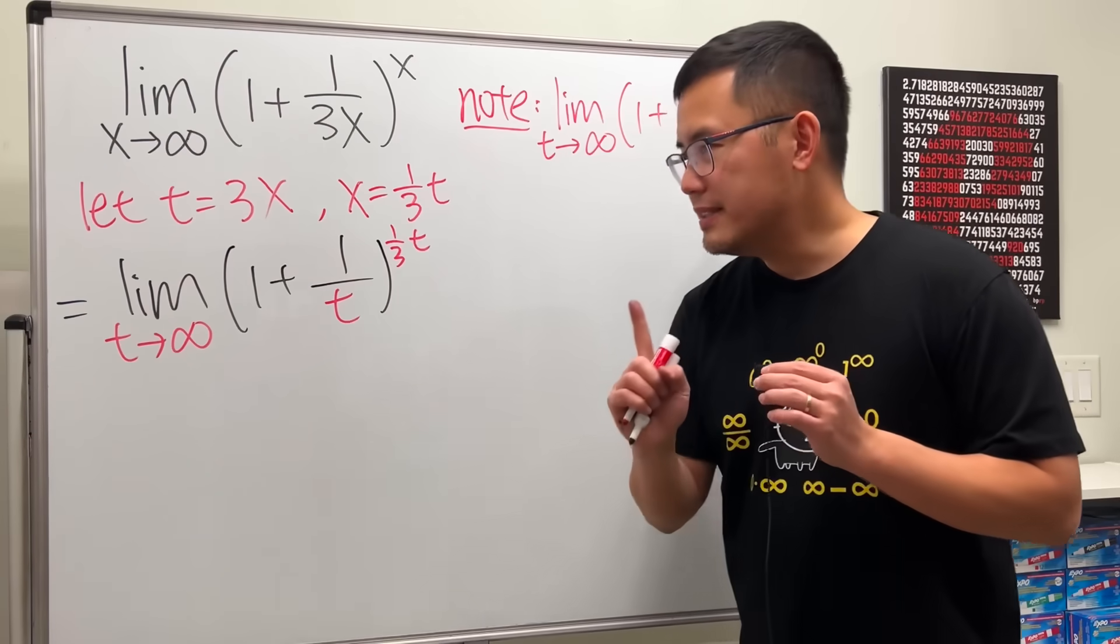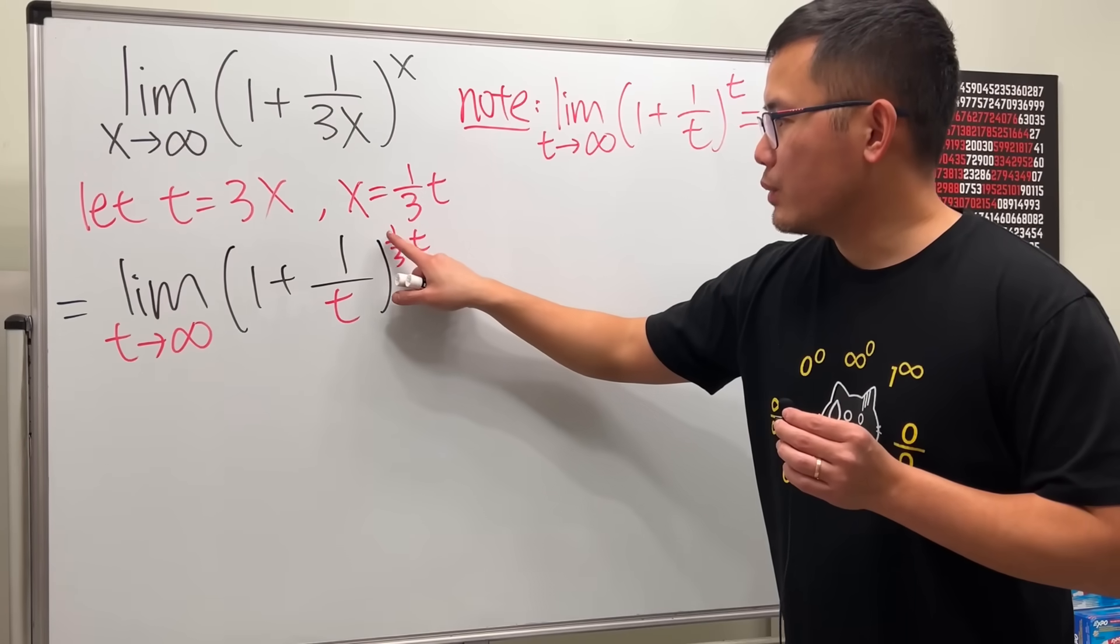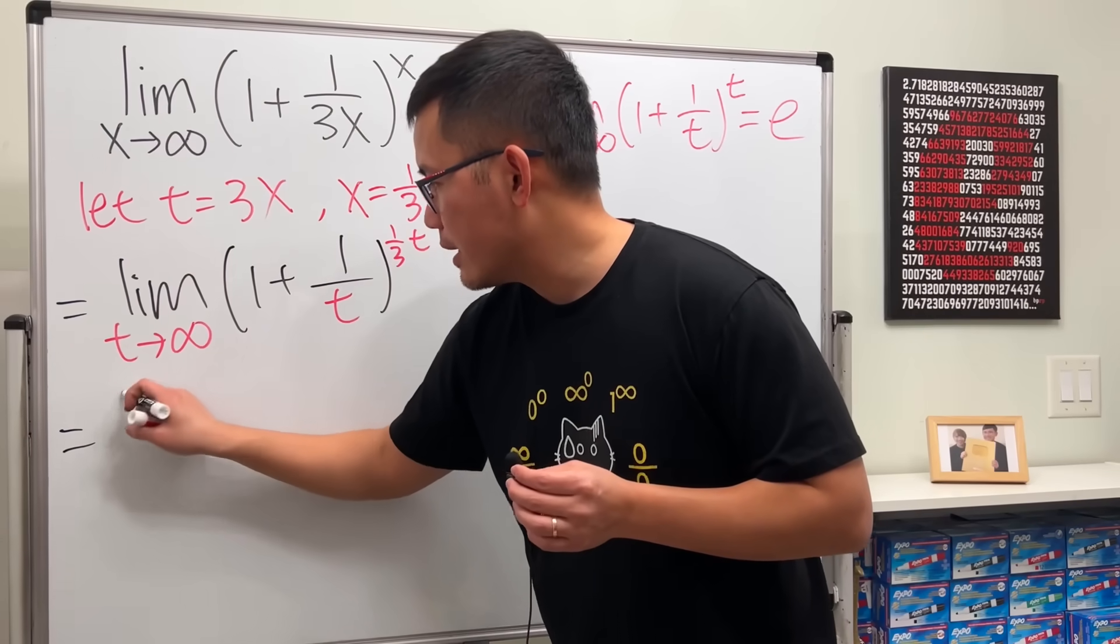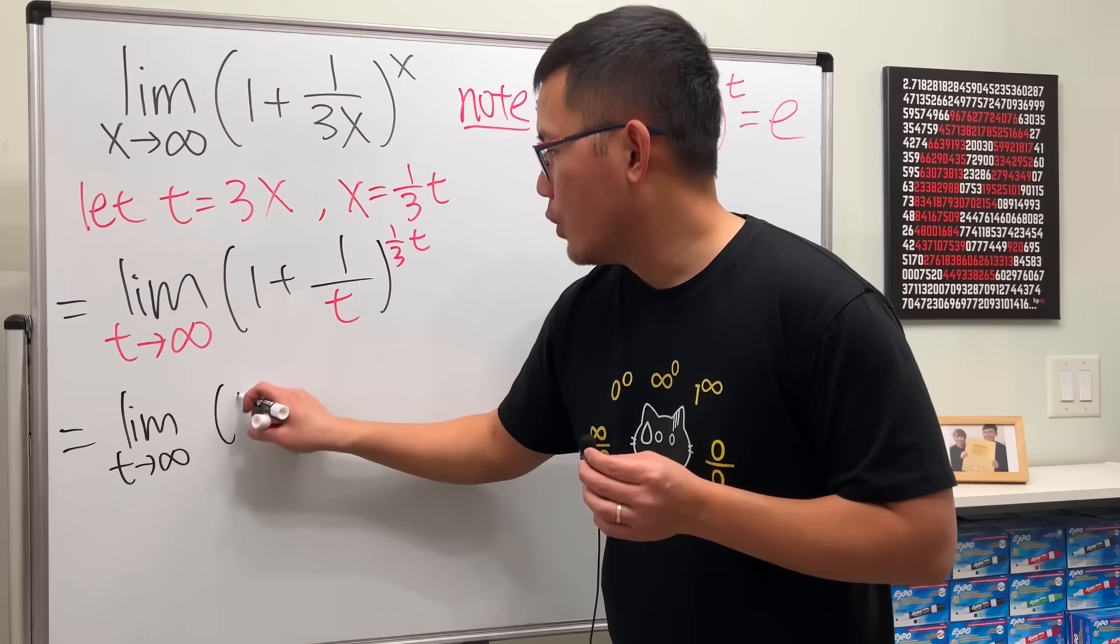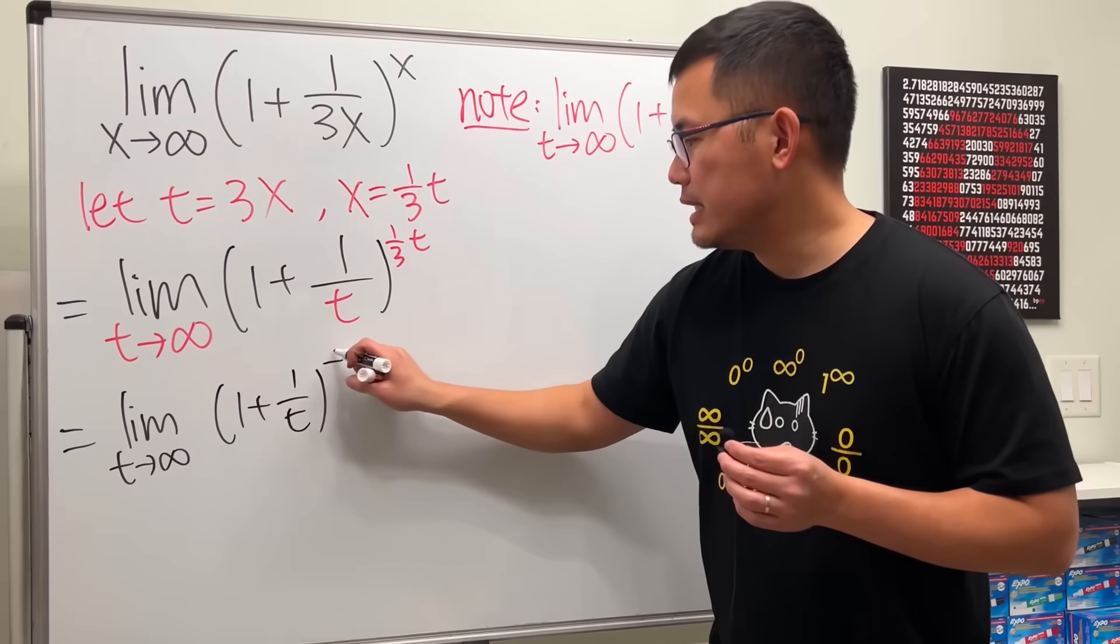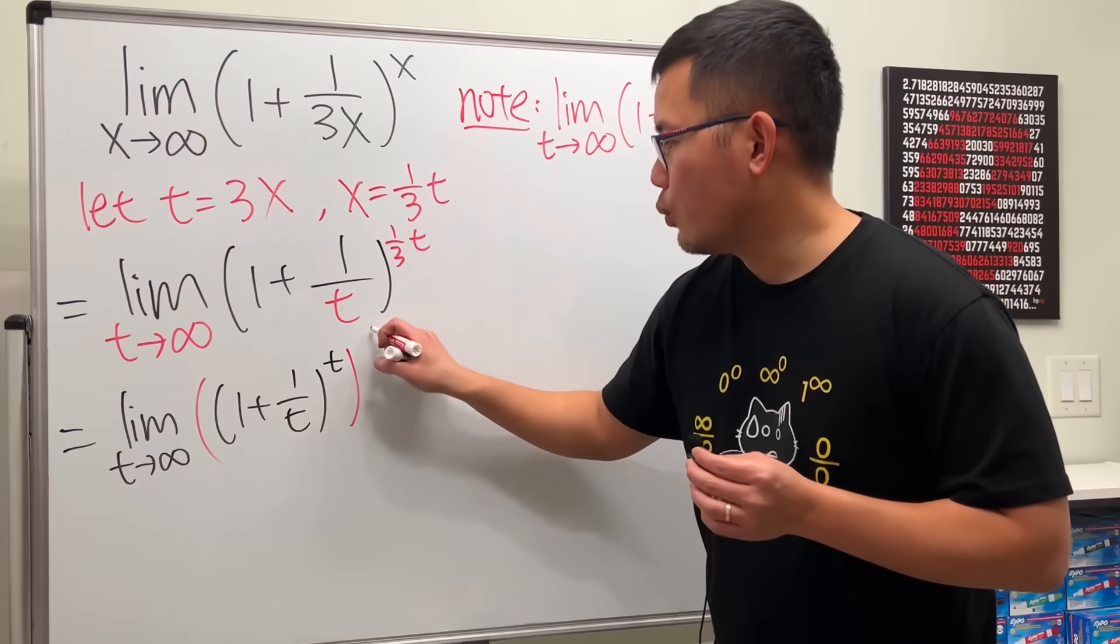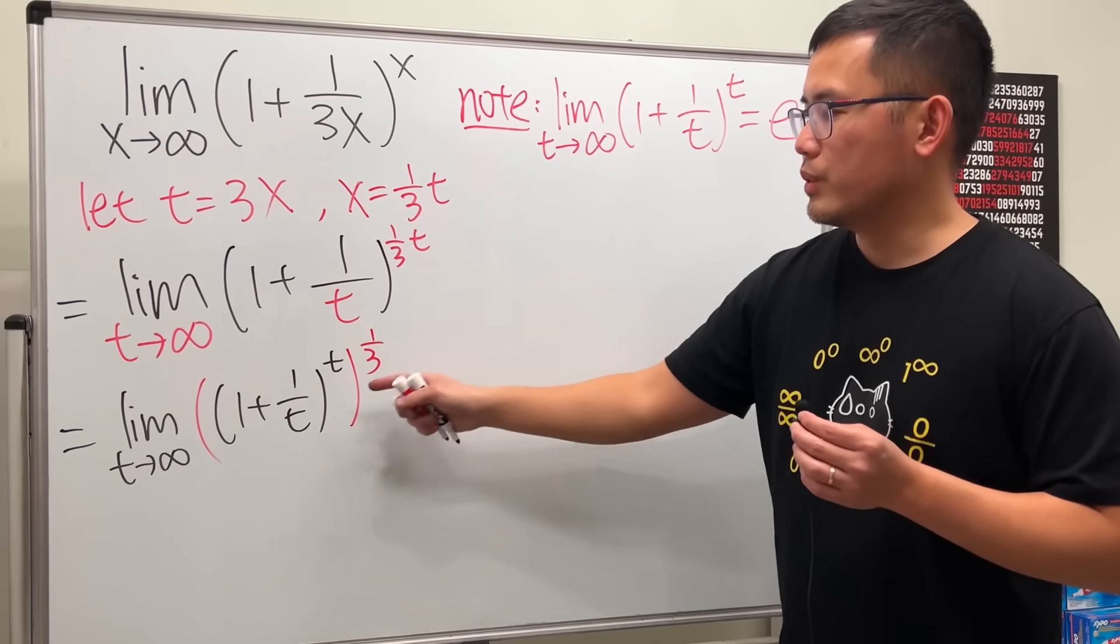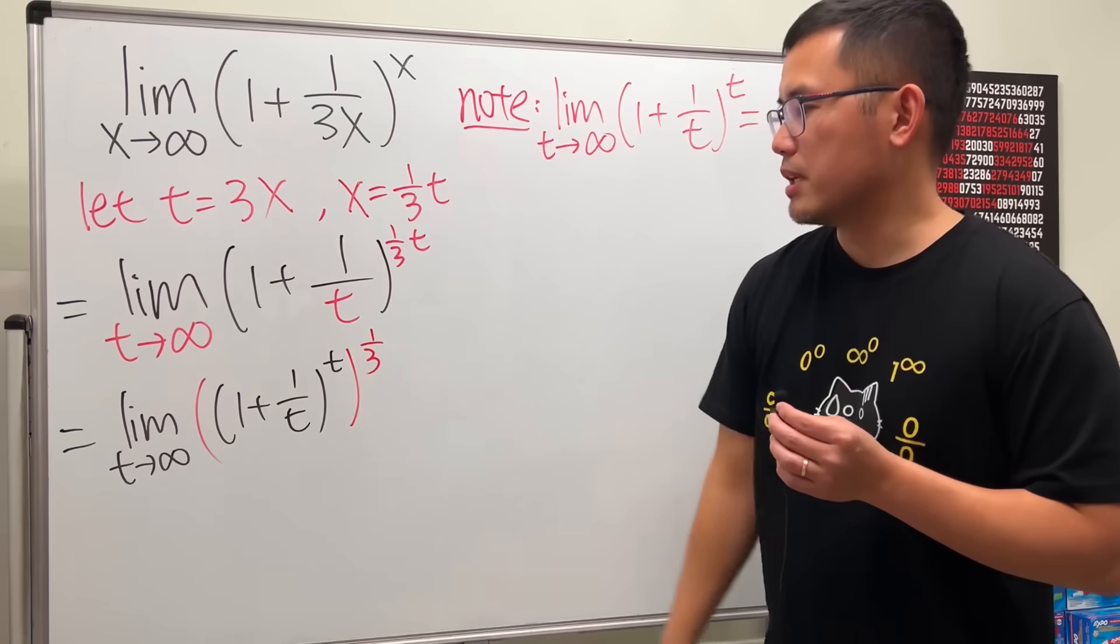Now, this is what we can do. Check this out. Firstly, we see that we have the 1 over 3 times t. We can use the rule of exponent and write this down as the limit as t goes to infinity of 1 plus 1 over t raised to the t's power first and then raised to the 1 over 3 power. Because we multiply the exponent, we can have the power and then to power.